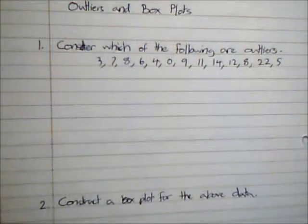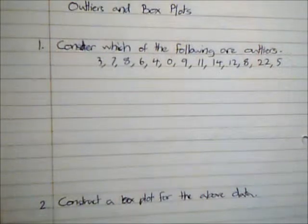In this video we're going to consider outliers and box plots. An outlier is any value which we consider extreme enough and we want to discount it from most of our statistical analysis. Here we've got a set of data. I'm just going to order it first of all.